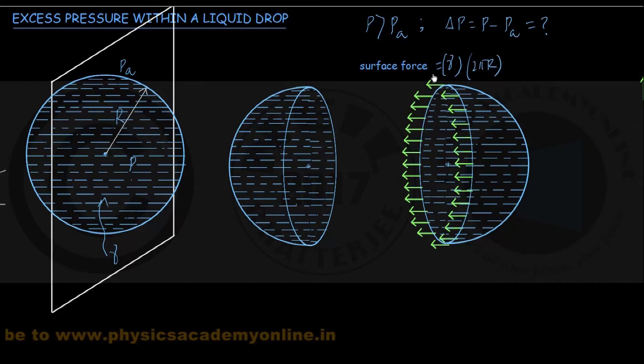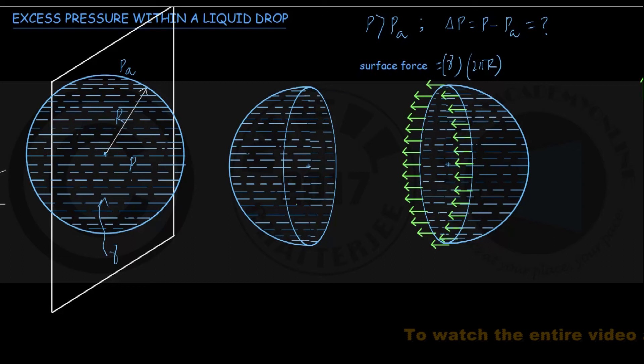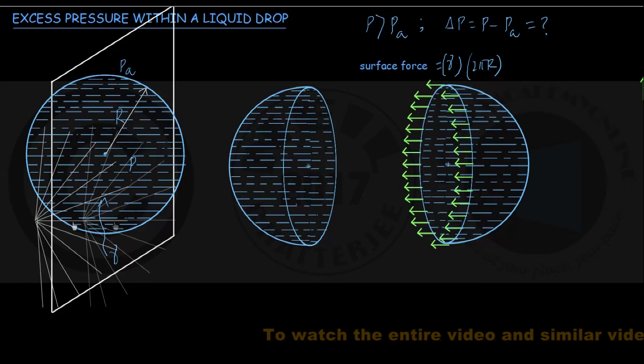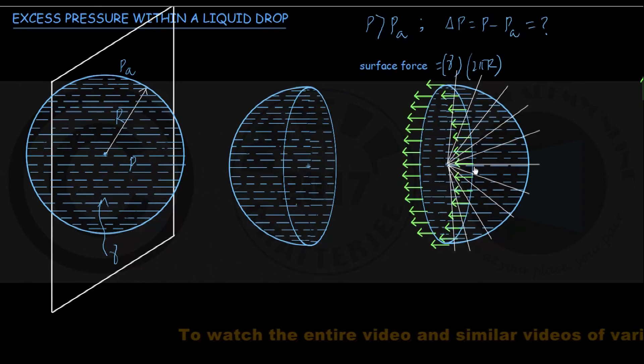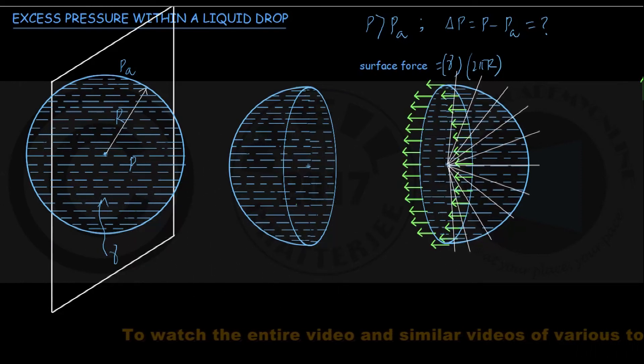There is one more force acting in the horizontal direction because of the excess pressure within this liquid. The pressure inside is P, outside pressure is PA, excess pressure is delta P, that is P minus PA. This excess pressure force is acting in the radially outward direction from inside onto this hemispherical surface.